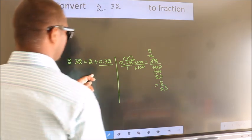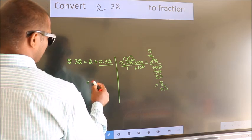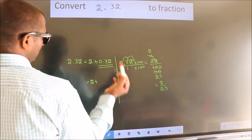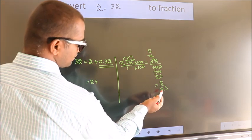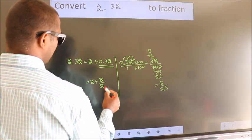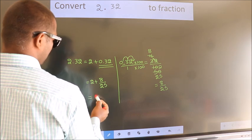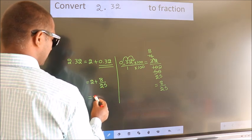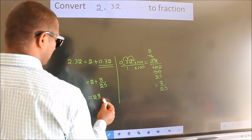Now, here. 2 plus, in place of 0.32, we write this fraction, 8 by 25. 2 plus, in mixed fraction, it is 2 8 over 25.